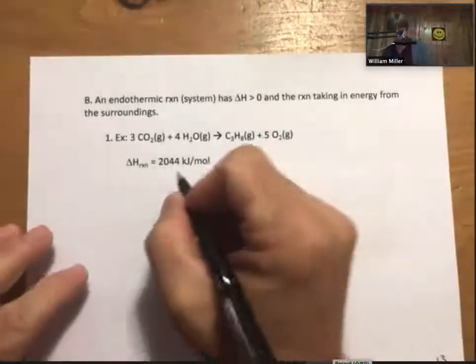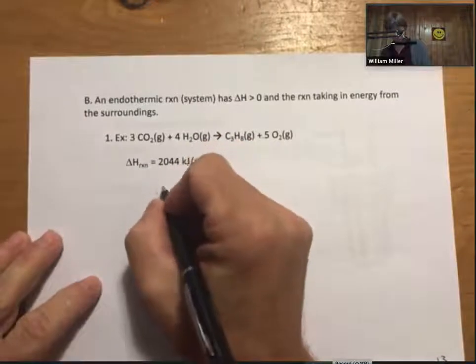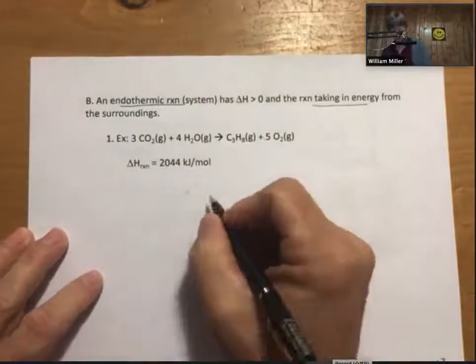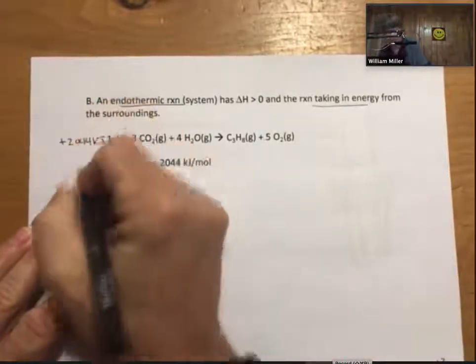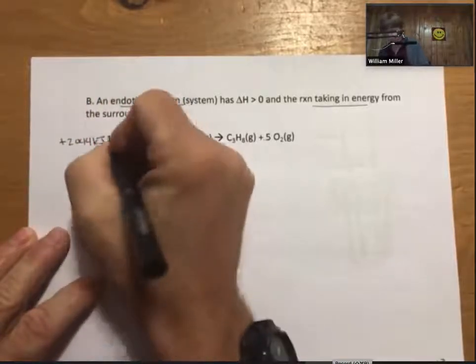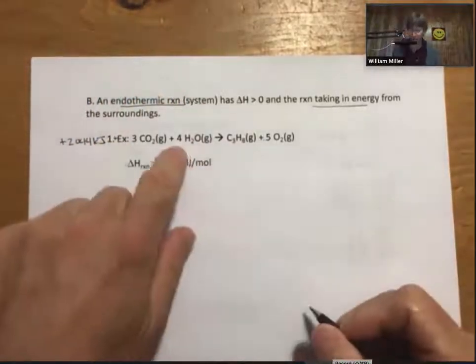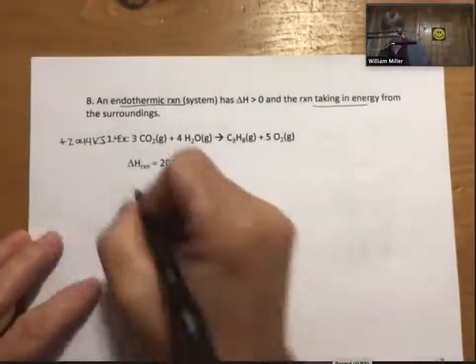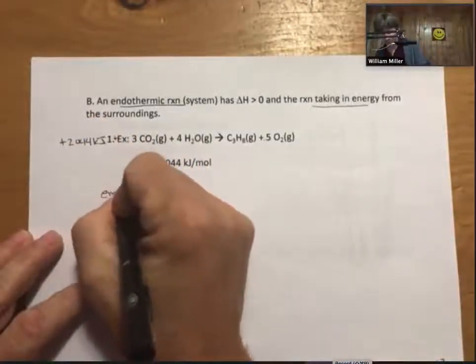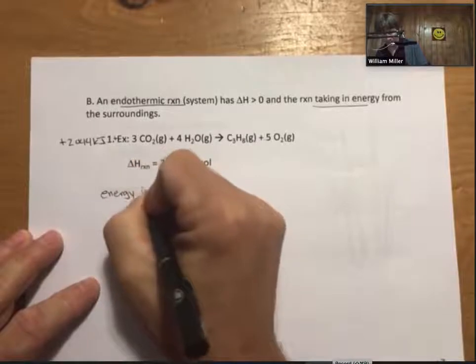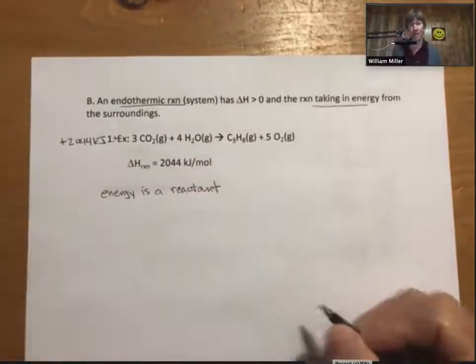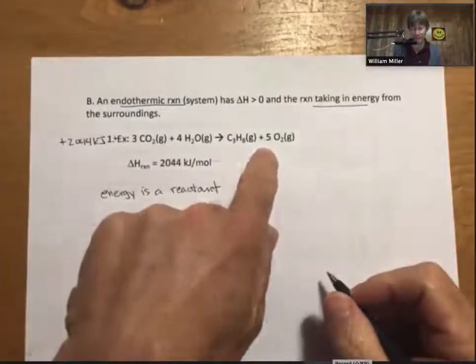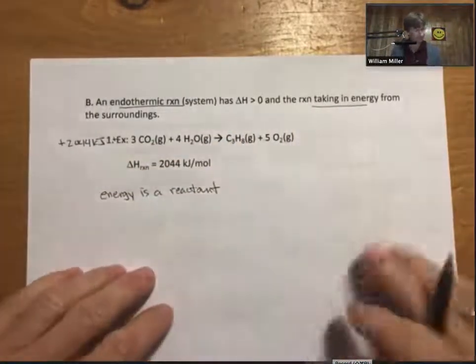For now, I want to show you that this is greater than zero. Energy is taken in. That is endothermic reactions. And we can put plus 2,044 kilojoules as a reactant. So energy is a reactant, where energy can be thought of. Energy is a reactant going into this reaction to make the products.